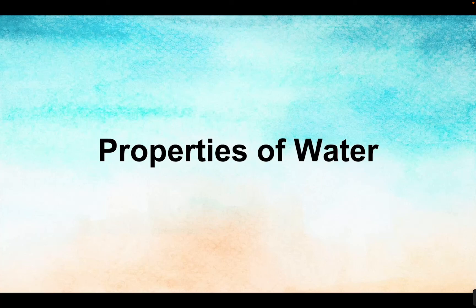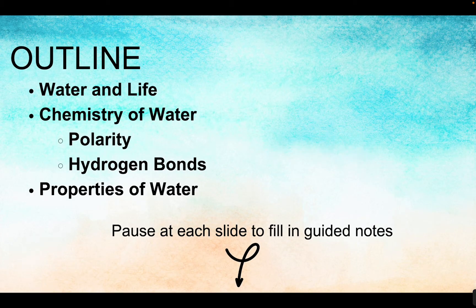In this lesson I'm going to be going over the properties of water. It's a pretty straightforward topic. We're going to start with the connection between water and life, then go over the chemistry of water, specifically what polarity means and about hydrogen bonds, and then we will get into the different properties of water one by one. For these notes you can pause at each slide and fill in the guided notes found in the description below, or you can watch this video straight through to have a better understanding of water.